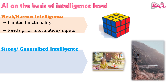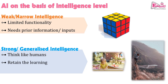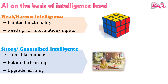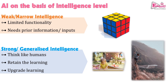Then we go to the entire contrast of it — that is strong intelligence or generalized intelligence. The machines or algorithms which are capable of thinking like humans are able to retain the learning out of data processing and data sets, and they are able to upgrade their learning accordingly. For example, just like infants — they learn throughout life, as they grow, and till they become adults, they retain whatever they have learned and use that learning to move forward in life. Similarly, these algorithms are designed to think like humans, to retain the learning taken from data processing, and those algorithms evolve into better logic and better algorithms.